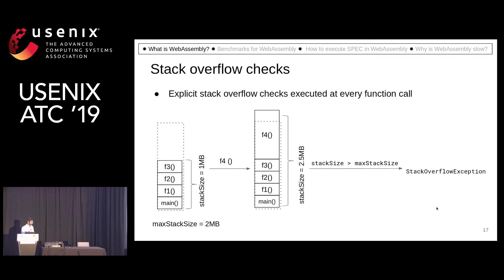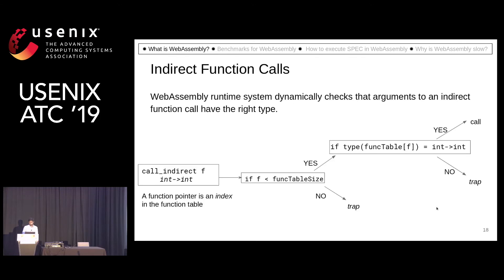And if that happens, an exception is thrown. The other check is the indirect function call check. Every indirect function call instruction is represented by a function pointer, which has to be checked whether it is valid.